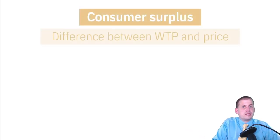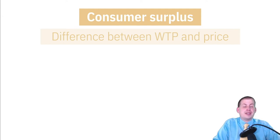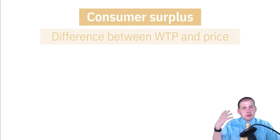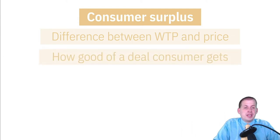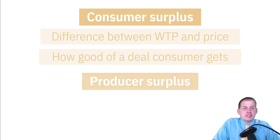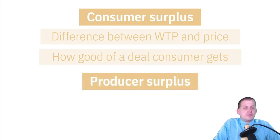Consumer surplus is from the buyer side — it's the difference between your willingness to pay and the price that you actually paid. So if you're willing to buy a book for ten dollars but the actual price is five dollars, you get five dollars of surplus. That's essentially 'good deal points' — a measure of how good a deal the consumer gets.